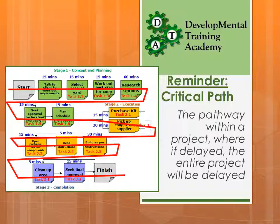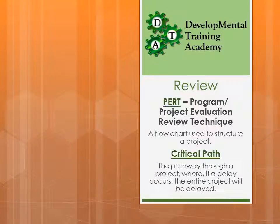As a reminder, the critical path is the pathway within a project where, if it's delayed, the entire project will be delayed. So if any of those tasks run late, your entire project completion time will potentially slip. As a quick review: PERT stands for Program or Project Evaluation Review Technique — a big word for a flowchart — used to structure your project. It follows the project lifecycle: concept, planning, execution, and finalisation. The critical path is a pathway through the project where if a delay occurs, the entire project will potentially be delayed.